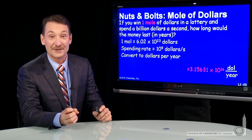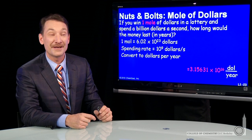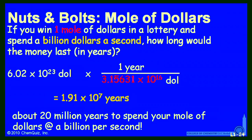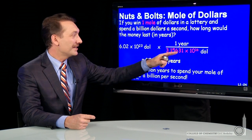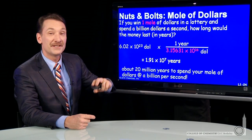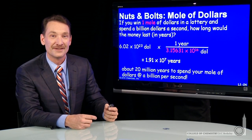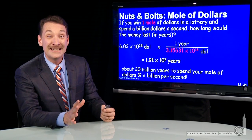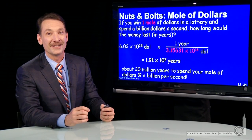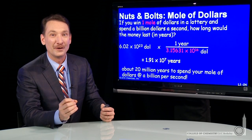Now I still have a mole of dollars to spend — let's see how long in years that will take. So a mole of dollars, 6.02 times 10 to the 23rd, times my conversion factor of 3.15 times 10 to the 16th dollars per year — the dollars cancel and leave me the number of years: 1.91 times 10 to the 7th years. So almost 20 million years to spend your mole of dollars, even at a billion dollars per second. That's just how large a mole is.